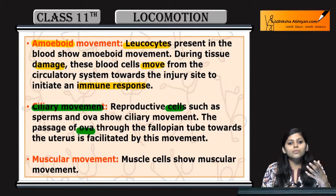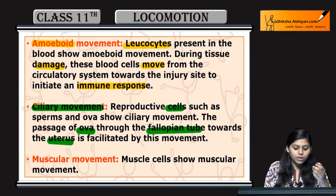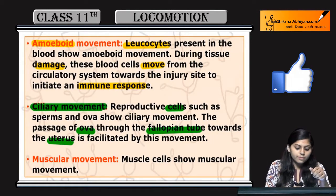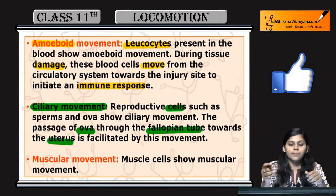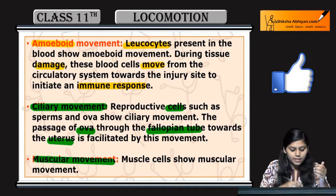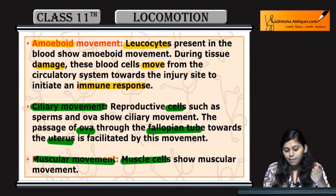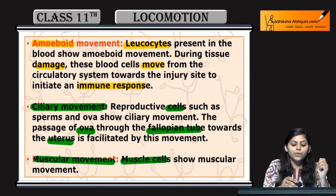This is the ciliary movement, which occurs in the uterus. Next is the muscular movement, which is shown by the muscle cells.